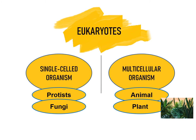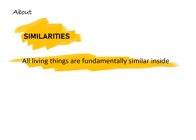In multicellular organisms there are two categories. The first is the animal kingdom, where human beings are included along with all other animals. Secondly, the plant kingdom includes herbs, shrubs, trees, climbers, and creepers. These are the differences between the prokaryotes and eukaryotes.